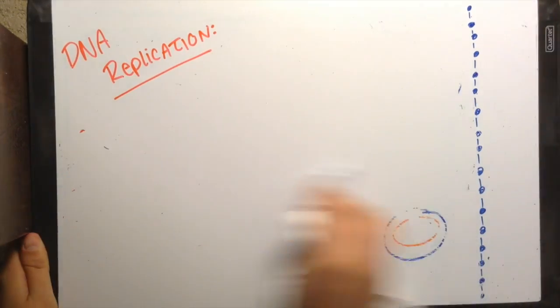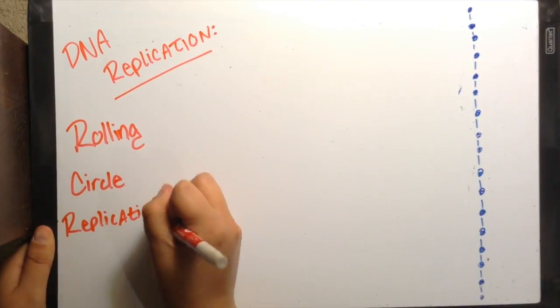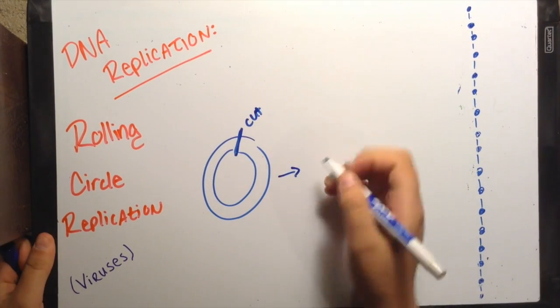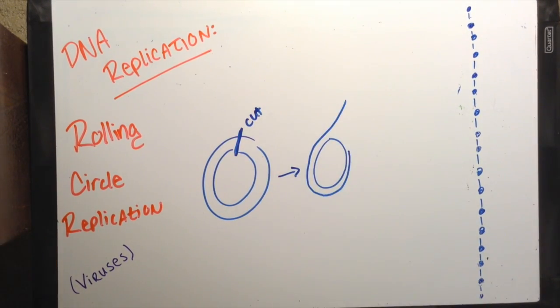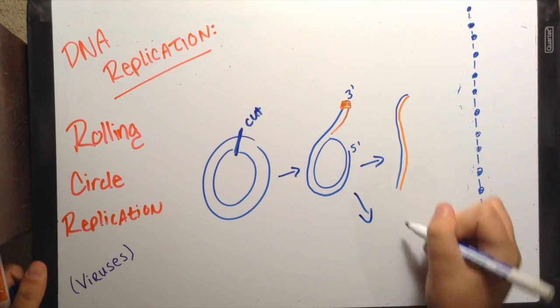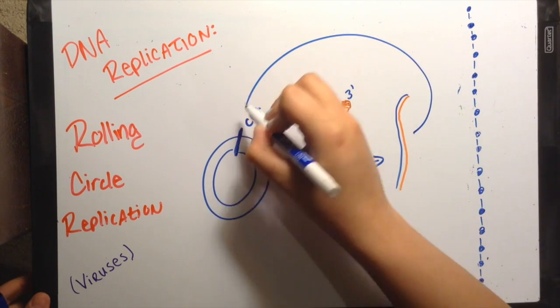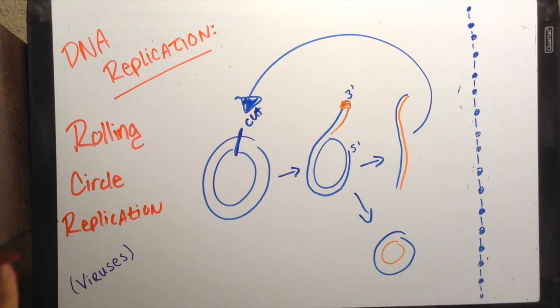Rolling circle replication occurs in some viruses. Replication begins with a cut in the circular DNA, making a 3 prime OH and a 5 prime phosphate. Replication begins at the 3 prime end, adding nucleotides to the inner circle and displacing the 5 prime cut piece. Cleavage releases the linear single strand and a double strand of circular DNA. This linear strand can become a circle again and replicate, acting as a template.